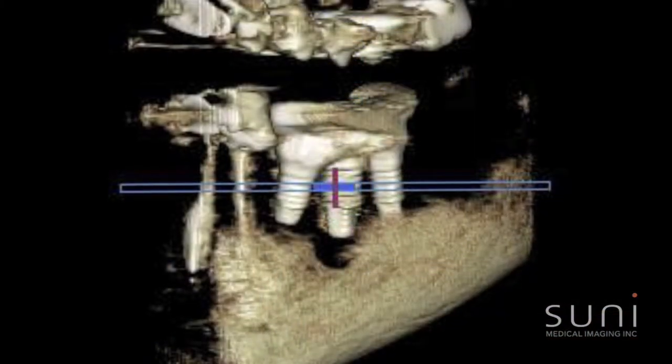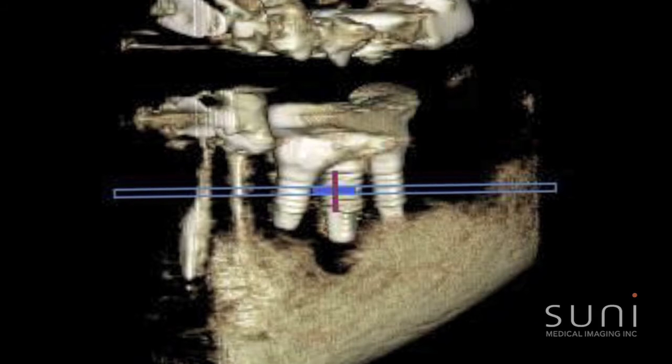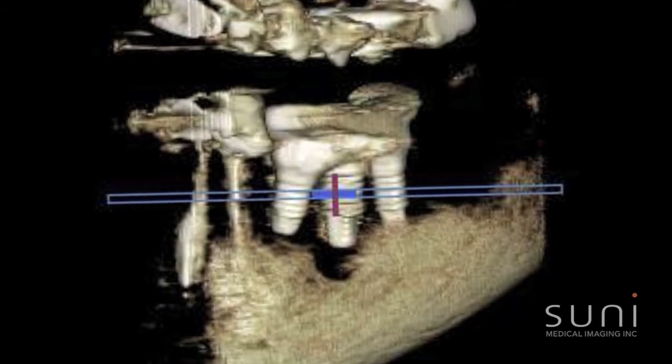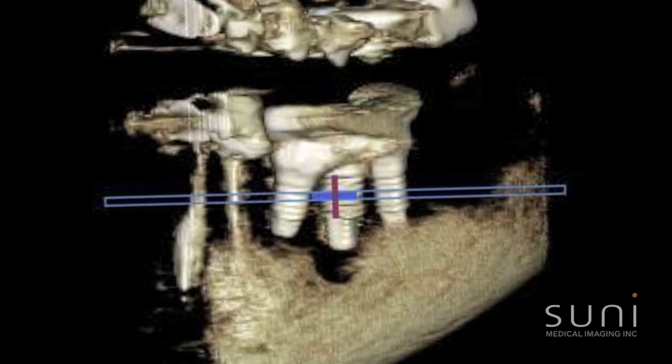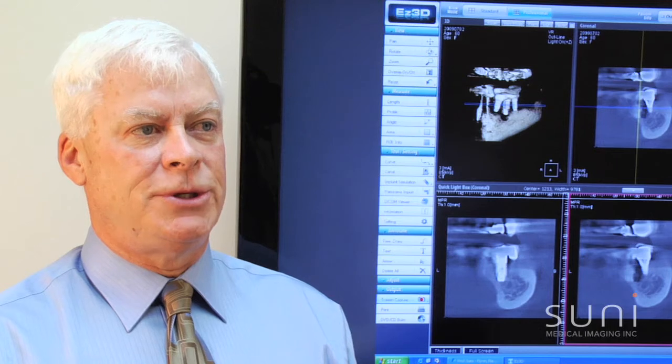When you're in the posterior maxillary area, 3D imaging identifies the location of the sinus and the volume of the sinus, and again allows you to select the diameter and length of implant and any grafting procedures that will be necessary in order to place an implant in that area.